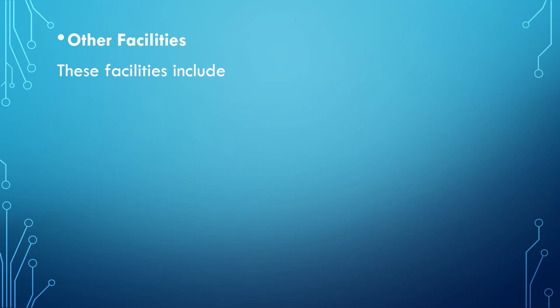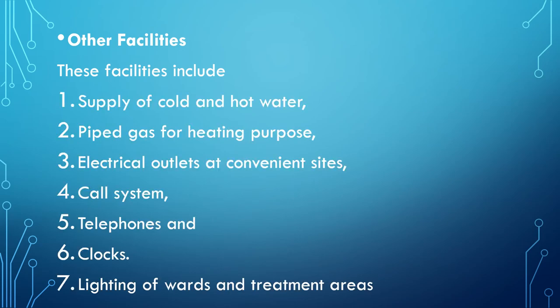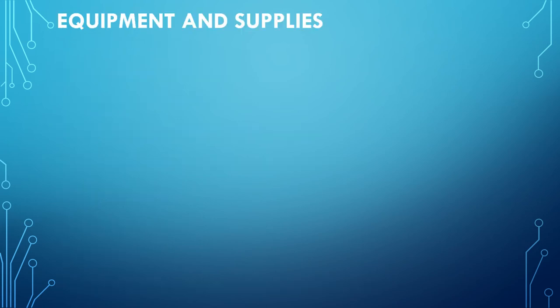Other facilities include supply of cold and hot water, piped gas for heating, electrical outlets at convenient sites, call system, telephones, clocks, and lighting of wards and treatment areas. This concludes the physical layout section of the prerequisites of a nursing unit.